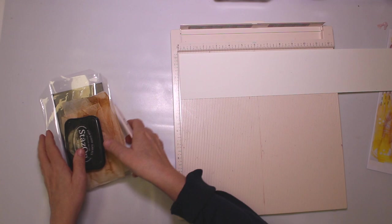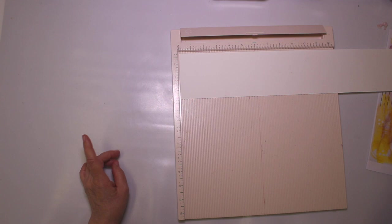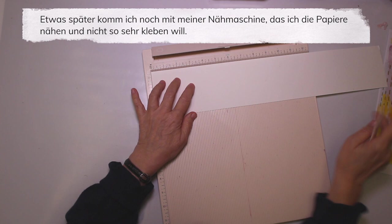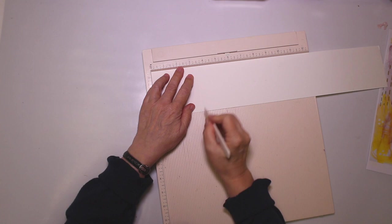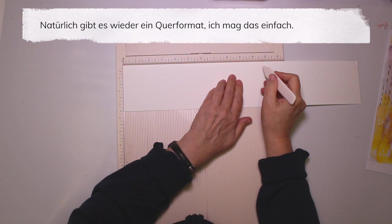I have over here my paper cutter and I have a little piece of ribbon. I'm going to come in later with my sewing machine because I want to sew the colorful papers rather than gluing them. But now I'm starting with scoring my paper, and of course it's going to be square again. You know I love square.